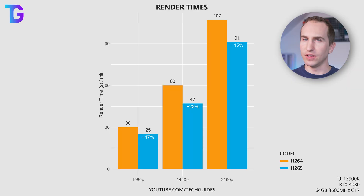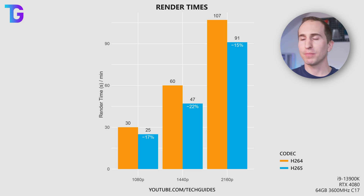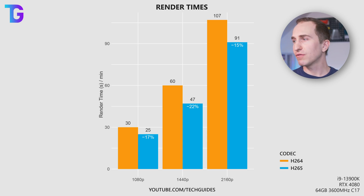Throughout this video, I'm going to be using three different resolutions: 1080p, 1440p, and 2160p or 4K. The orange bars on this plot show the render times for a one-minute sample clip of each of these resolutions in H.264, whereas the blue bars represent the same clip rendered in H.265. As you can see in this idealized case, I do get an improvement in render speeds when moving from H.264 to H.265.